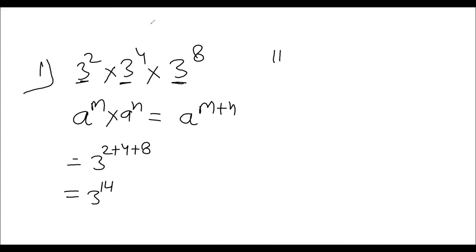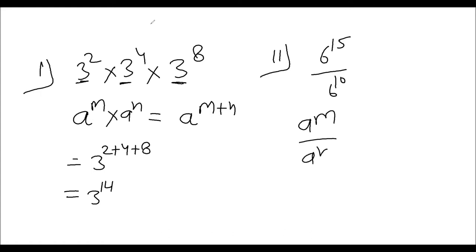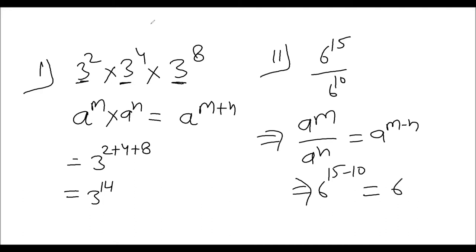Look at this second question: 6 to power 15 upon 6 to power 10. The base is the same and the powers are different. The first operation is multiplication and the second is division. The formula is: for division, we subtract the power; for multiplication, we add the power. So a to power m divided by a to power n equals a to power (m minus n). We minus the power: 6 to power 15 minus 10, so our answer is 6 to power 5.